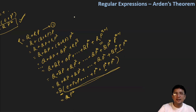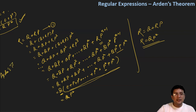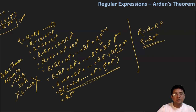This proves that according to Arden's theorem, r = q + rp has only one solution, that is qp*, and there is no other solution. Only by putting qp* do you get r = qp*. We will use Arden's theorem for finding the regular expression equivalent of a given NFA and DFA in the next lecture. Note that Arden's theorem applies to NFA and DFA, but it does not apply to epsilon-NFA. Thanks for watching.